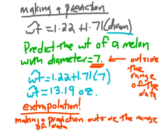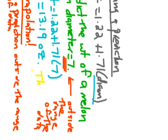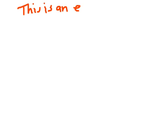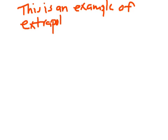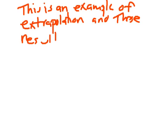Whenever you are asked to make a prediction, make sure you are not extrapolating. If you are, you should write a note to the effect of: this is an example of extrapolation, and these results should be interpreted with caution.